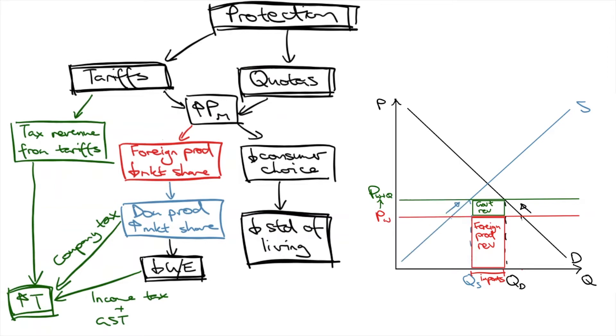One important difference though is that there is no tariff revenue for the government. The foreign producer gets to pocket the full price increase. Having said that, the government can still gain tax revenue from income tax, company tax, and GST receipts. But again, this is not shown in the market diagram.